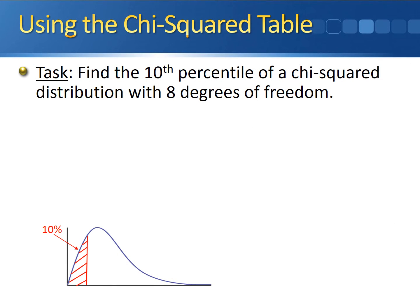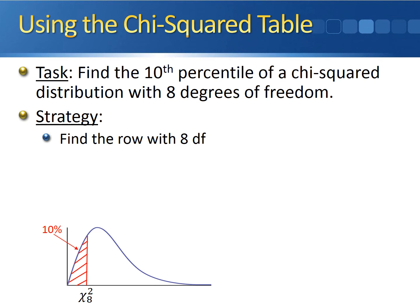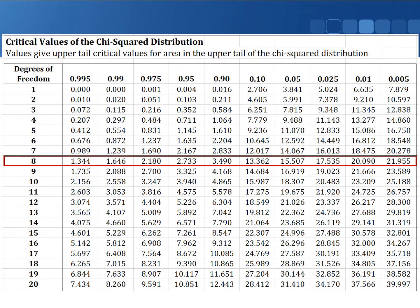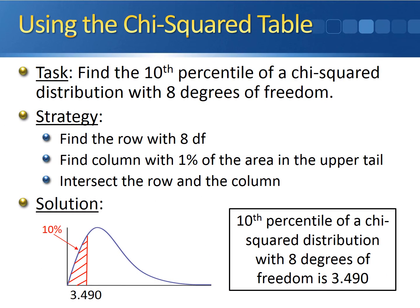Suppose we wanted to find the 10th percentile of a chi-squared distribution with 8 degrees of freedom. Just like the t-distribution, we find the row with 8 degrees of freedom and the column with 90% of the area in the upper tail, then intersect the row and the column. Here's the row with 8 degrees of freedom and here's the column with 90% in the upper tail — this 0.9 corresponds to the 10th percentile. They intersect at 3.490, so the 10th percentile of a chi-squared distribution with 8 degrees of freedom is 3.490.